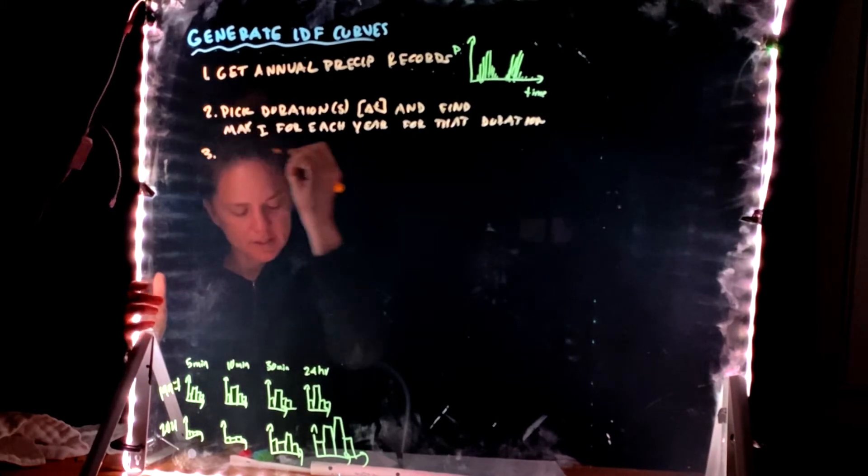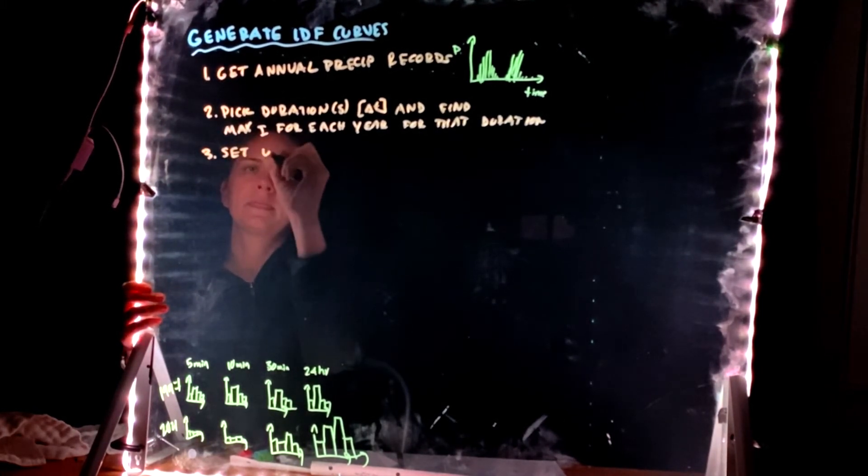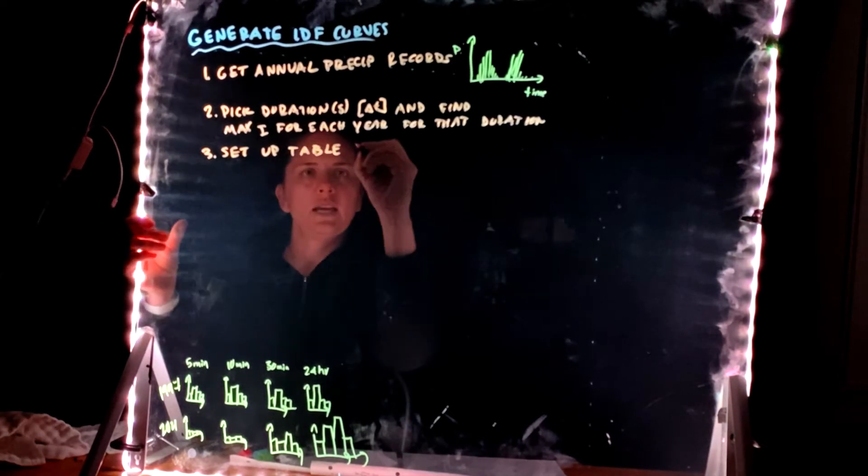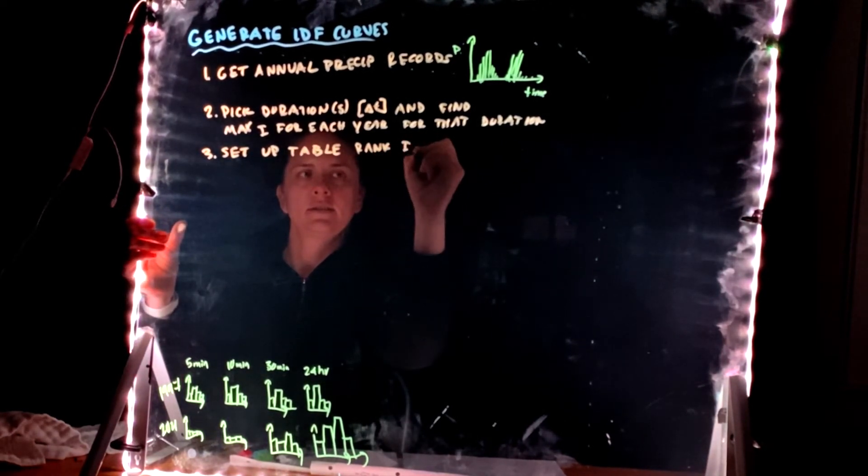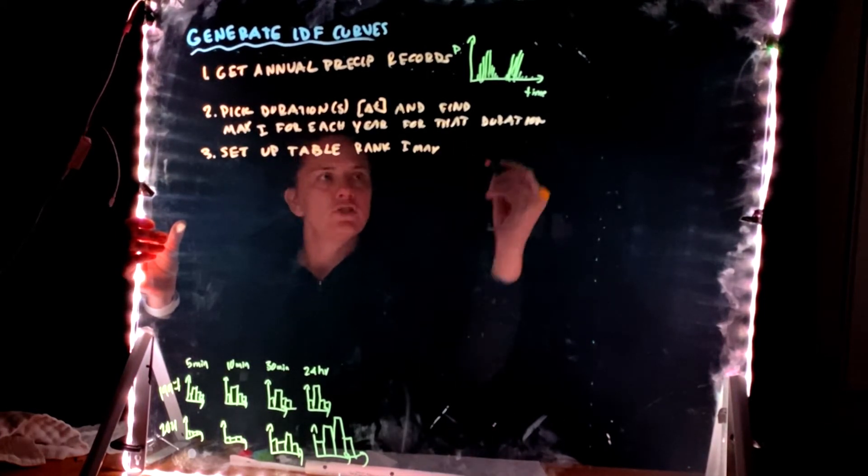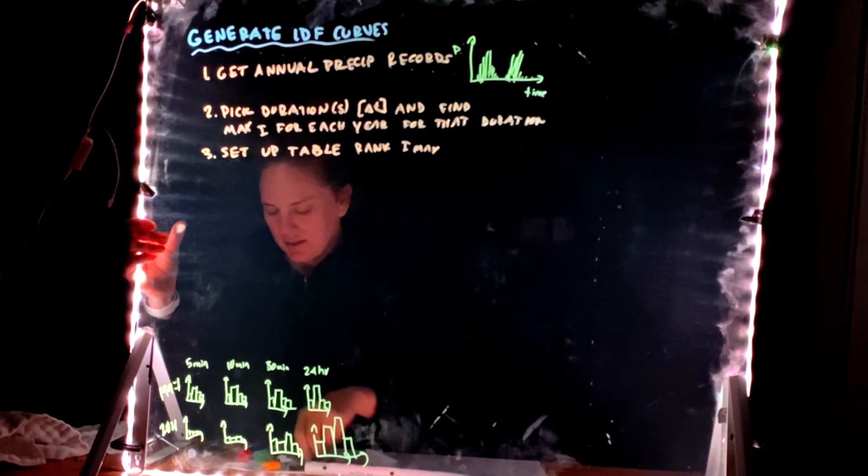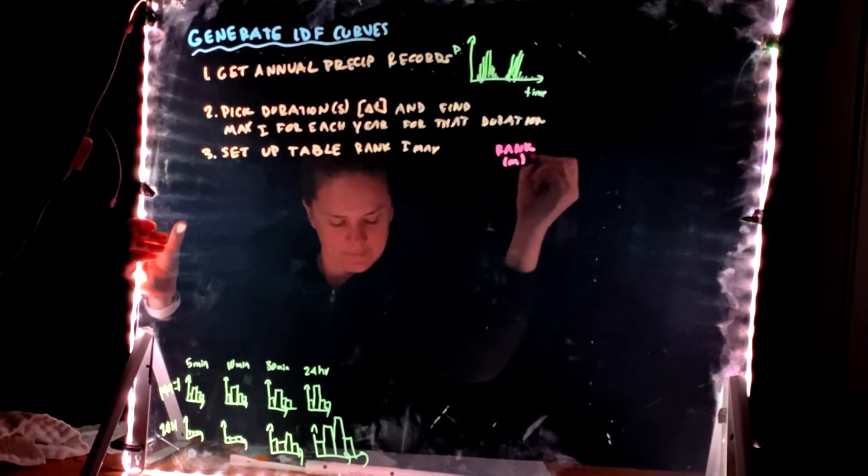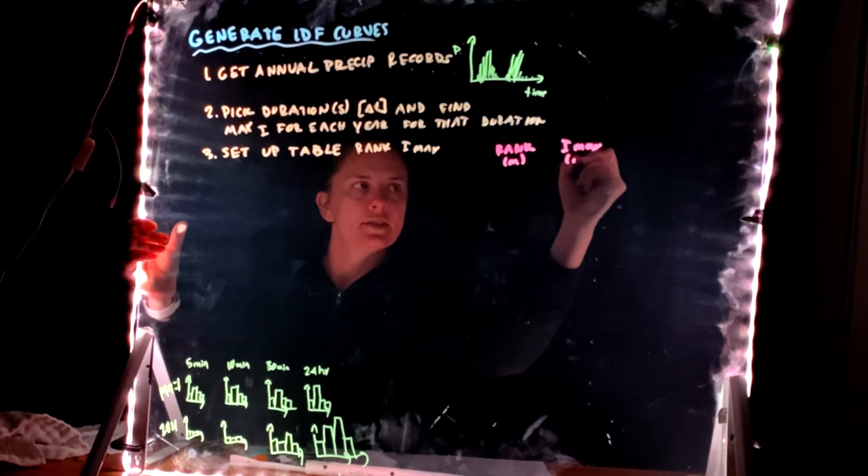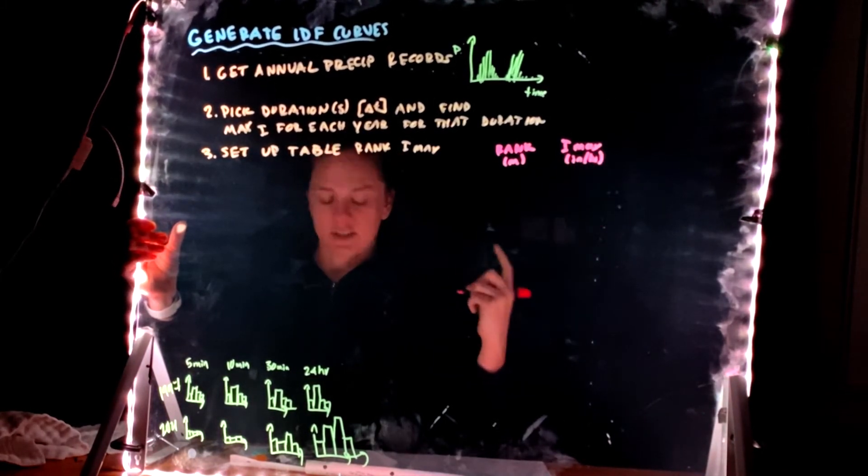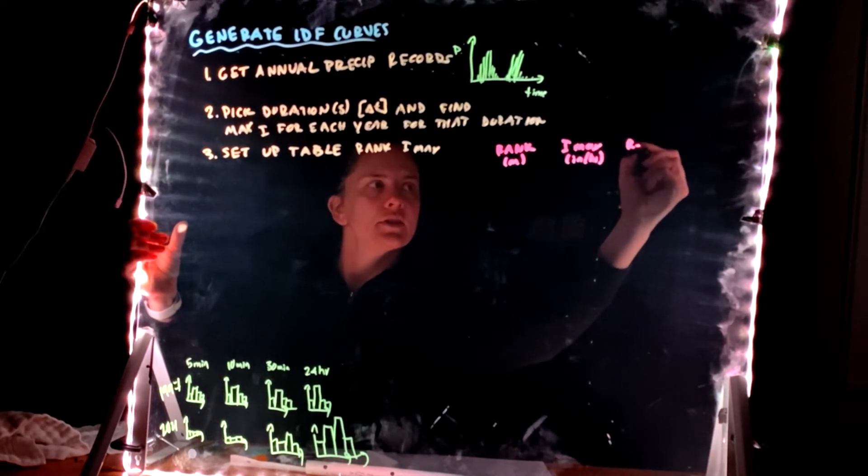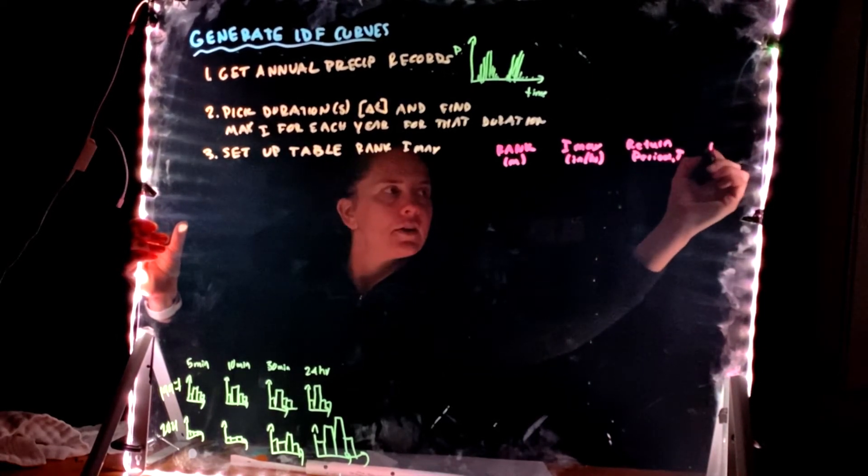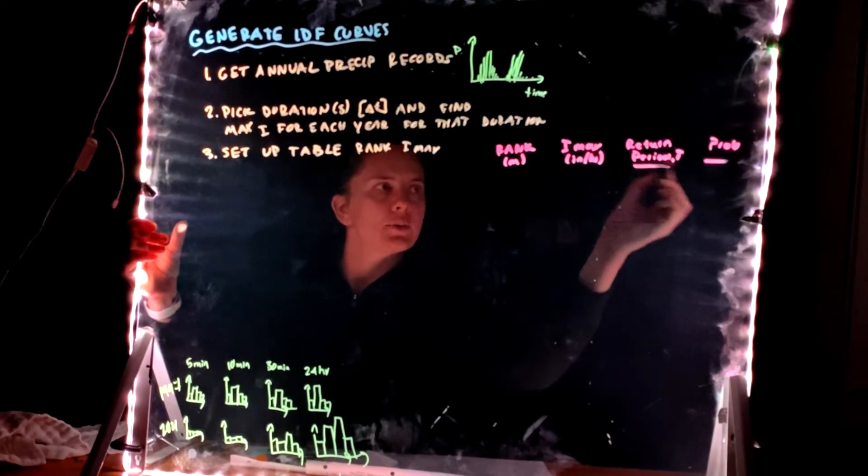So in my example below, I'm going to look at every five minutes increment where it rained and I'm going to find the maximum in 1997 of five minutes. I'm going to record that value. I'm going to do the same in 1998, 1999, all the years until 2021. Finding the maximum total precipitation that fell in the five minutes. There we go. Then repeat for 10 minutes, repeat for 30 minutes, 24 hours. All the durations I'm interested in. Step three is going to be to set up a table ranking these IMAXs.